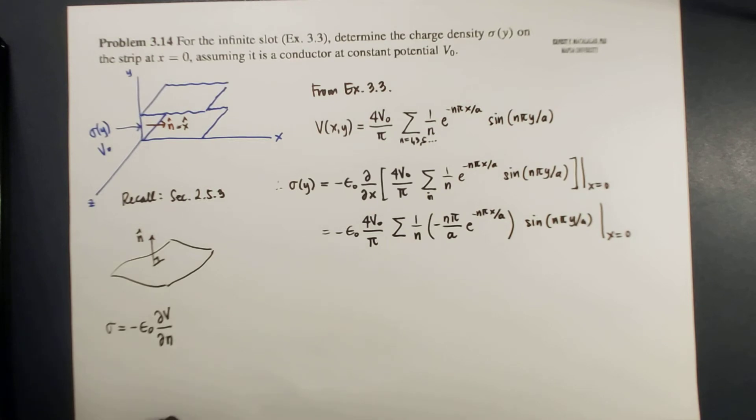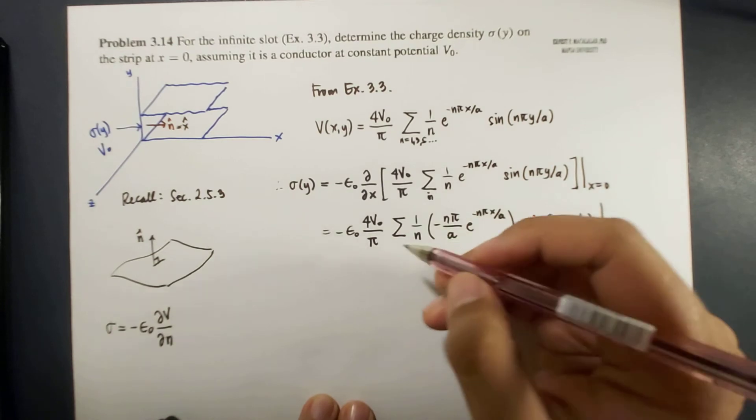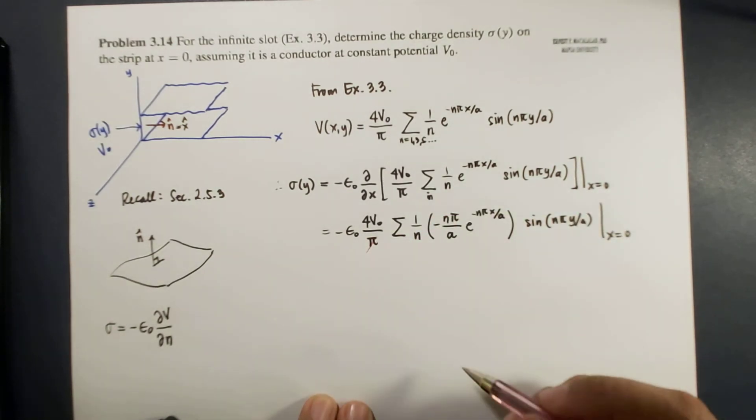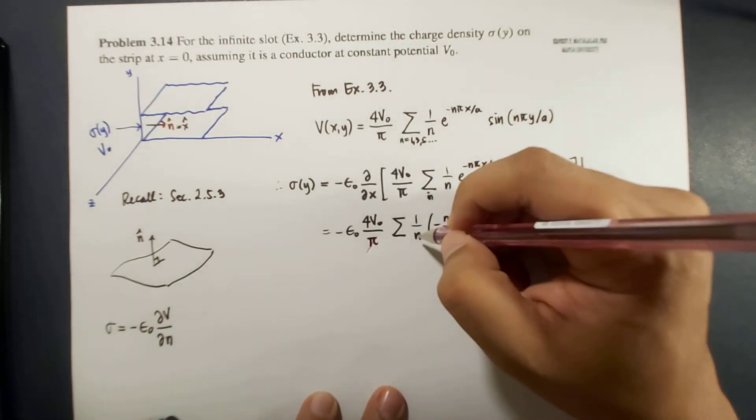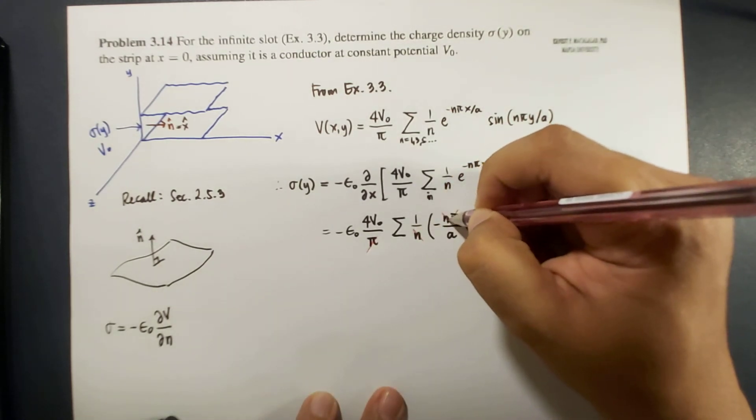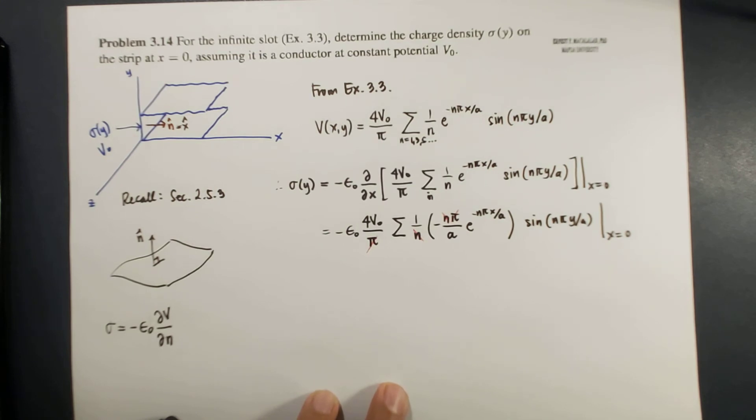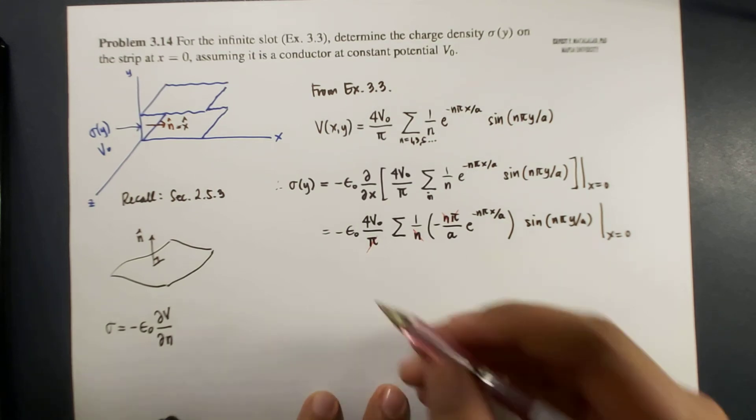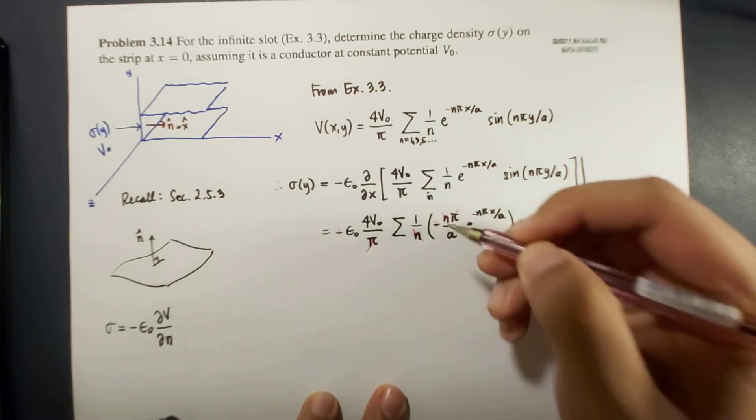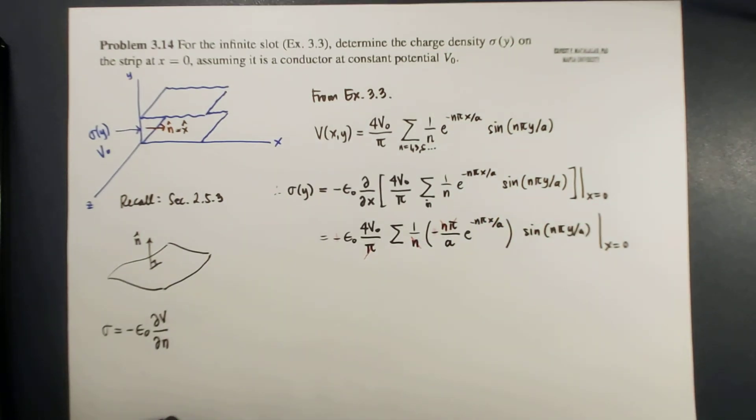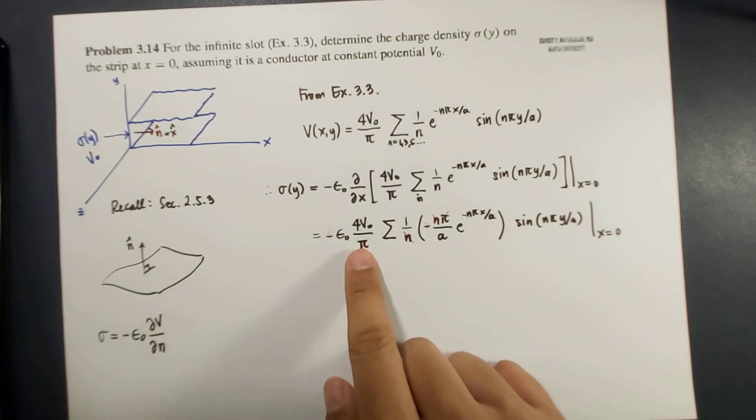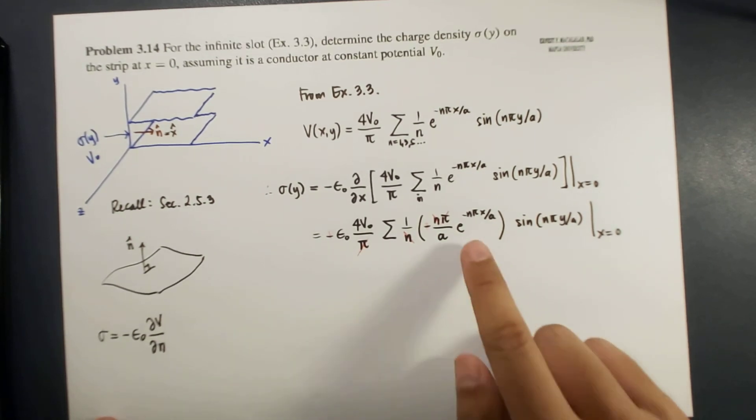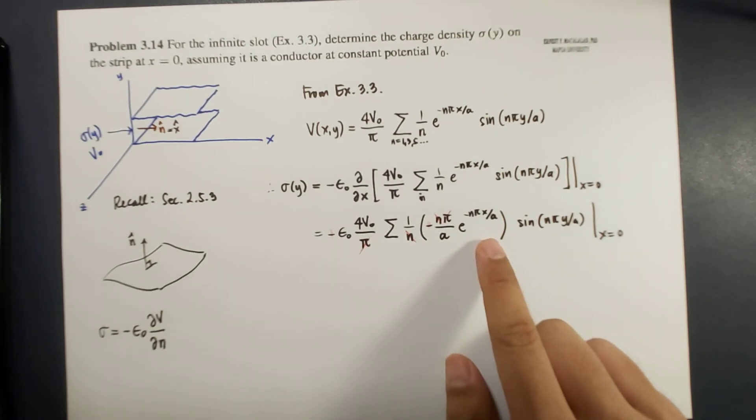So from here, we can actually do some cancelling. So we can cancel pi with pi. We can cancel n with n. We can also cancel these two negatives. Then we take out a to the other side.